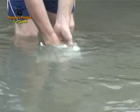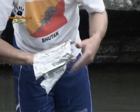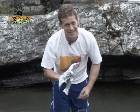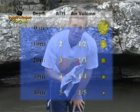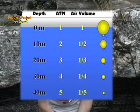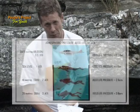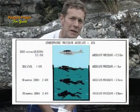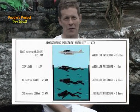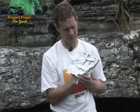So when divers swim below the surface, they have to keep this in mind. Every 10 meters below the surface is another atmosphere of pressure. We start above the water at one atmosphere of pressure; 10 meters below the water we are at two atmospheres of pressure; 20 meters below the water we're at three atmospheres of pressure; and so on. So you can imagine that divers have to be very careful of this.